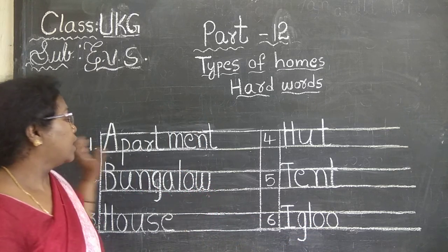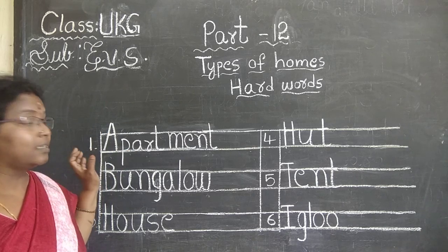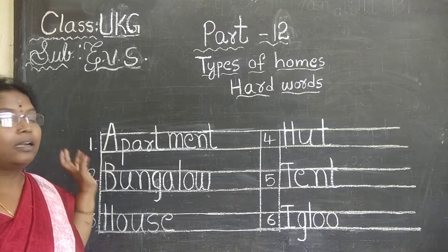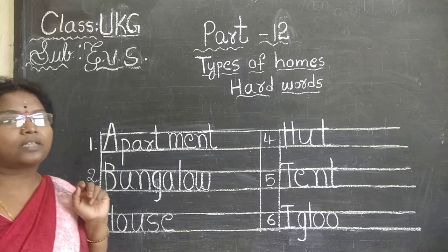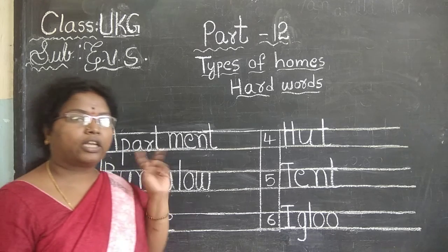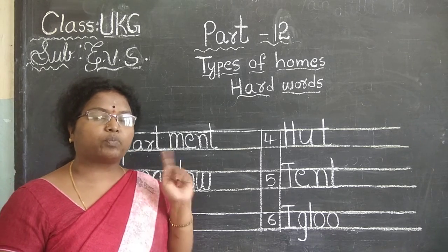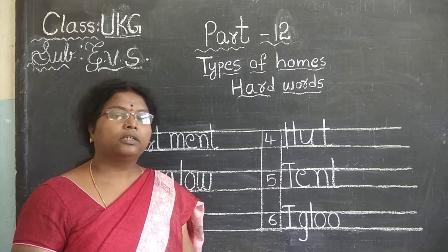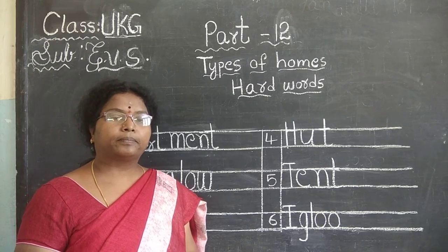Get out your double-line book and write like this, neatly. Touch two lines and write two times as homework children. Whenever you are writing, spell it and write children. Okay children, bye bye.